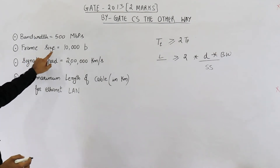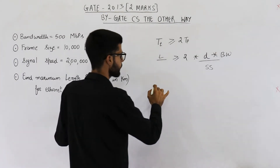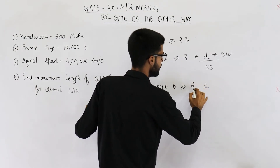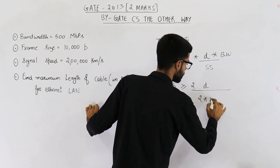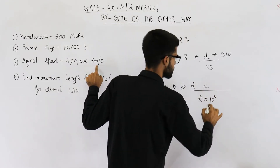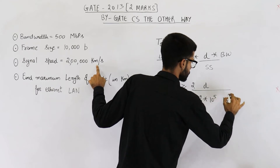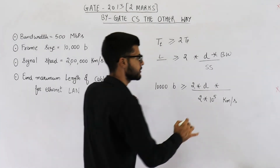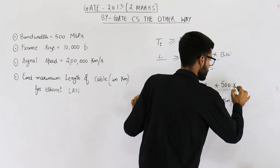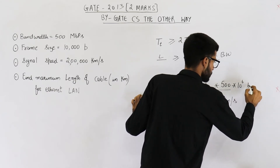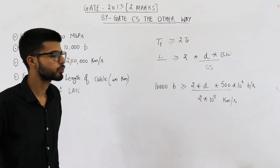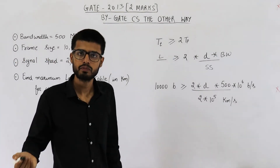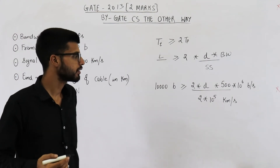The length of the packet L is given as 10,000 bits. This is greater than or equal to twice D divided by 2×10⁵ kilometers per second. The bandwidth is given as 500 megabits per second, which is 500×10⁶ bits per second. Note that mega means 10⁶ when talking about bandwidth, and 2²⁰ when talking about amount of data or memory.